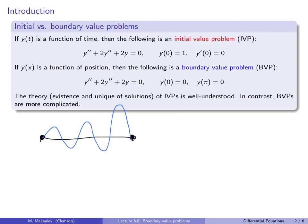Once you fix the temperature at the boundaries, that determines — maybe not uniquely — the temperature of the inside of the rod. The theory of initial value problems (IVPs) is well understood: we know they have a two-parameter family of solutions, and picking two initial values determines a unique solution. For boundary value problems, it's less clear — picking two boundary values might give you no solutions, a unique solution, or infinitely many solutions.